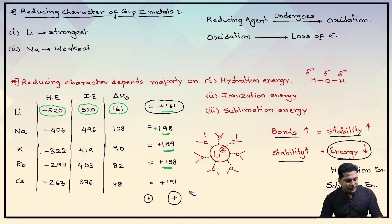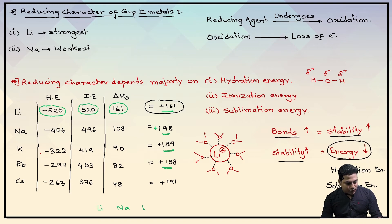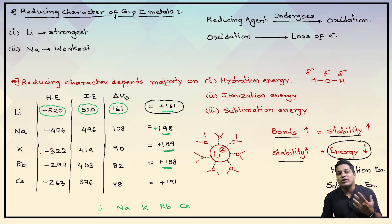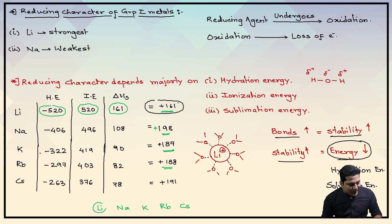So what is the meaning of these positive values? In the aqueous state, whoever requires the least energy will give electrons most easily. The least energy is 161 for lithium, so lithium will give electrons first. After lithium, potassium at 187 will give electrons second fastest. Then rubidium at 188, and finally cesium at 191.